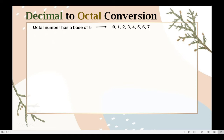In this method, we repeatedly divide the number by 8 until we get 0 as the quotient, taking note of each remainder. So, suppose we are going to convert the decimal number 230, or 230 to the base of 10, into octal using the repeated division by 8 method.